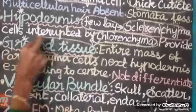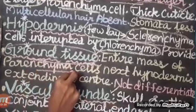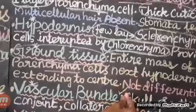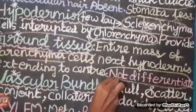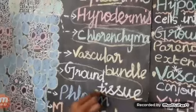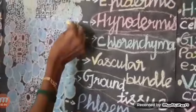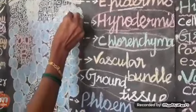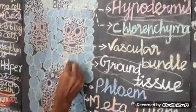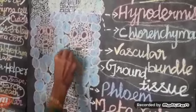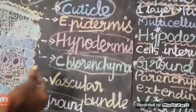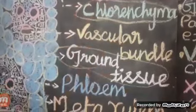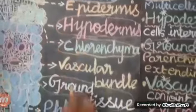The third topic is ground tissue, which is entirely made up of parenchyma cells. This is not differentiated. It is extending to the center. Next to the hypodermis, this ground tissue extends to the center. There is no endodermis and no cortex — it is not differentiated into separate parts.